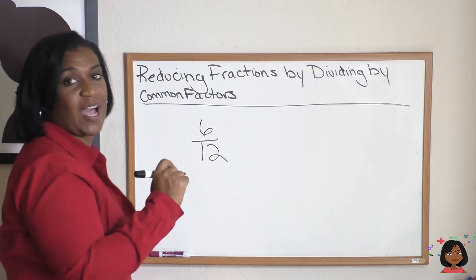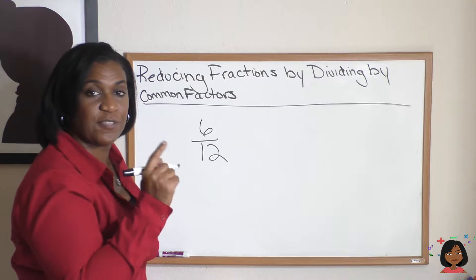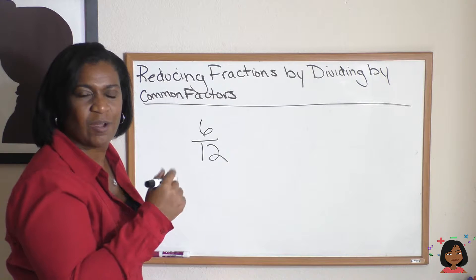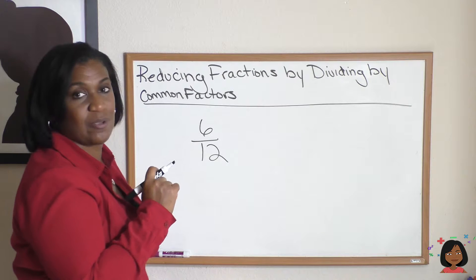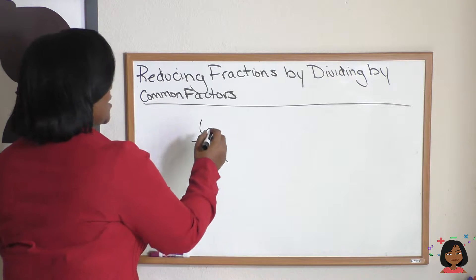We look for a common factor that both of these numbers have. Let's just start with 2, right? 2 goes into 6 and 2 goes into 12. Let's see where it takes us.